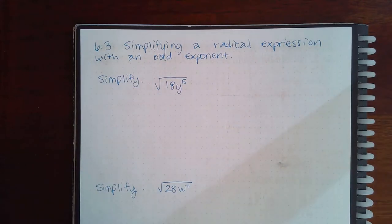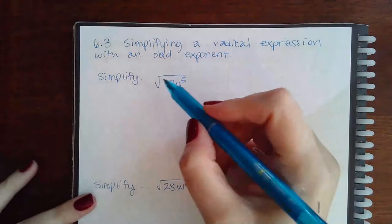Here we have 6.3 simplifying a radical expression with an odd exponent. And so we're going to do the numbers the same.